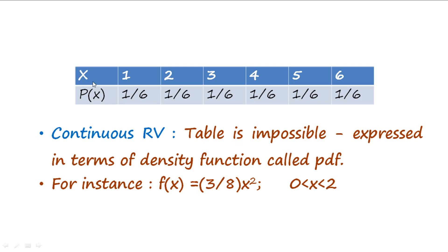On the other hand, in the case of a continuous random variable we cannot make a table because X can take an infinite sequence of values. So we express the probability distribution in the form of a formula or equation — we call it the probability density function, also abbreviated as PDF. For instance, the PDF can be expressed as f(x) = (3/8)x², defined for values of x from 0 to 2. This function shows probabilities not for specific values of x but for a specific range — for example, integrating this function from 0 to 1 gives us the probability of X from 0 to 1.